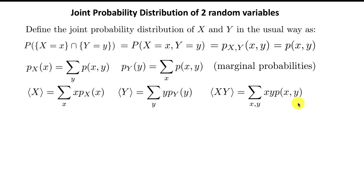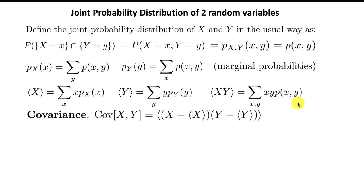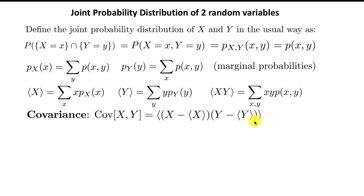We want to know if X and Y are independent of each other or if they actually have something to do with each other. So we define something called the covariance. The covariance of two random variables X and Y is defined as the deviation of X from its average value, multiplied by the deviation of Y from its average value, and then you take the average of this quantity.